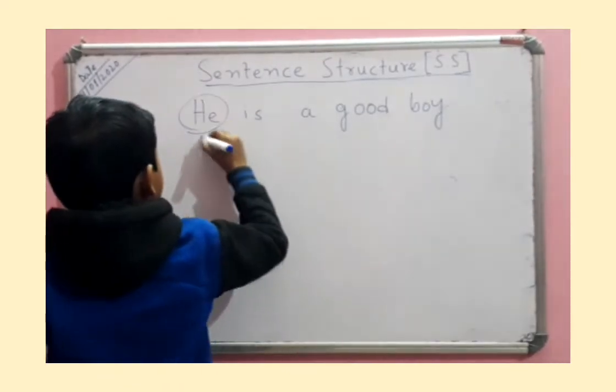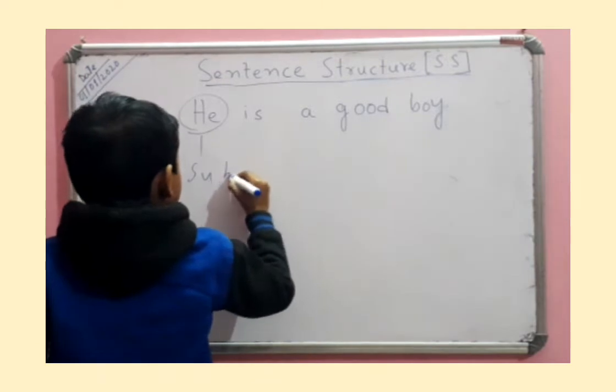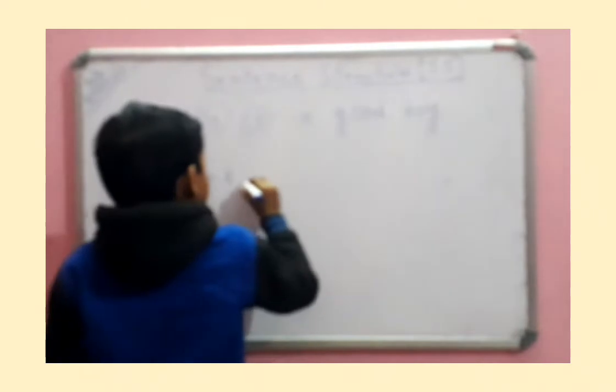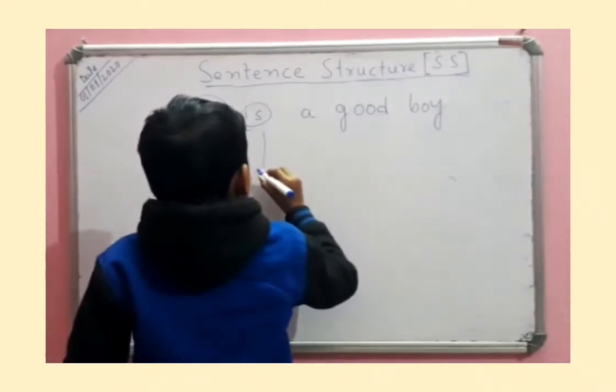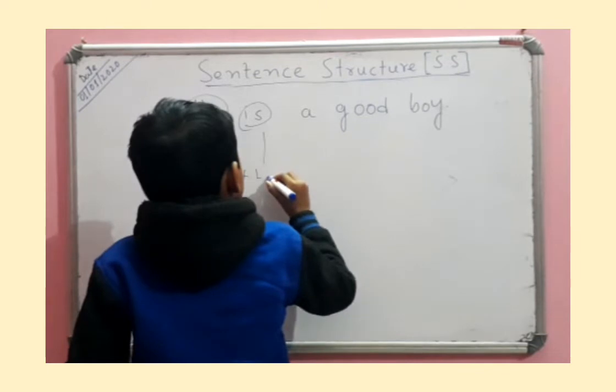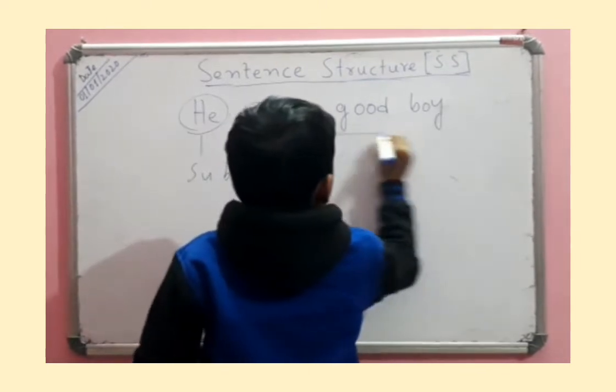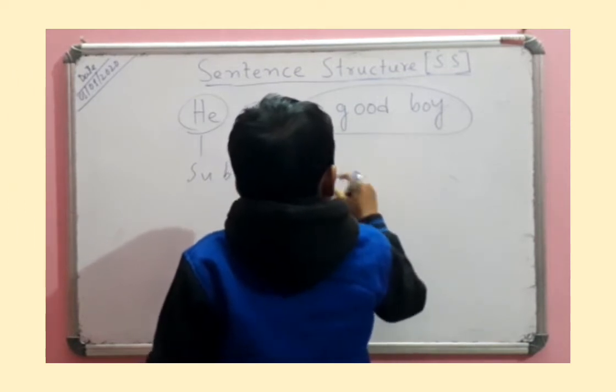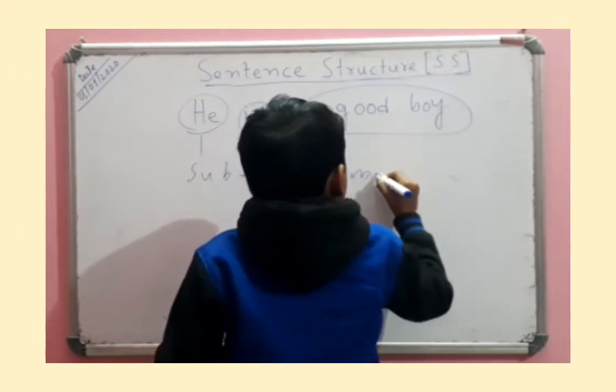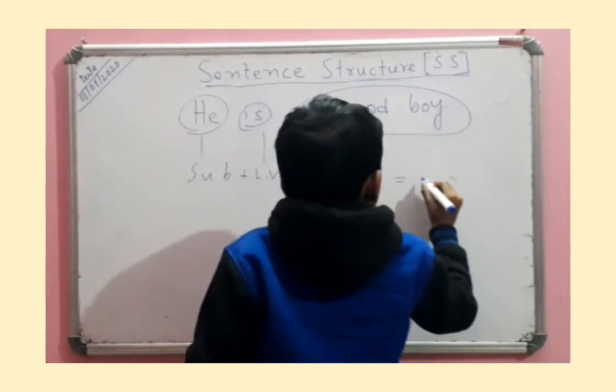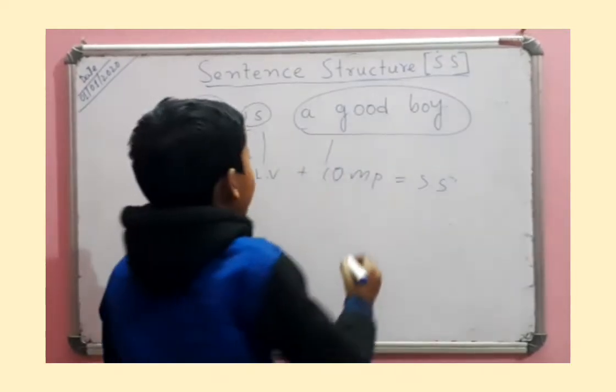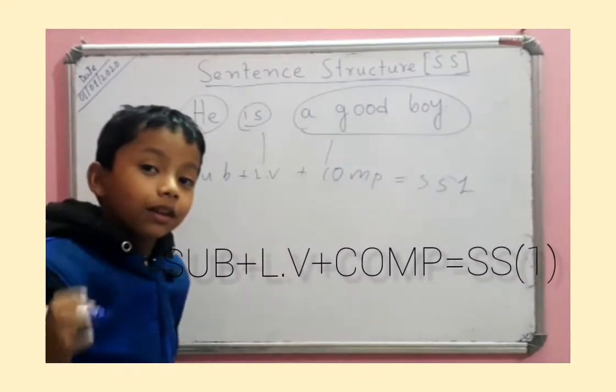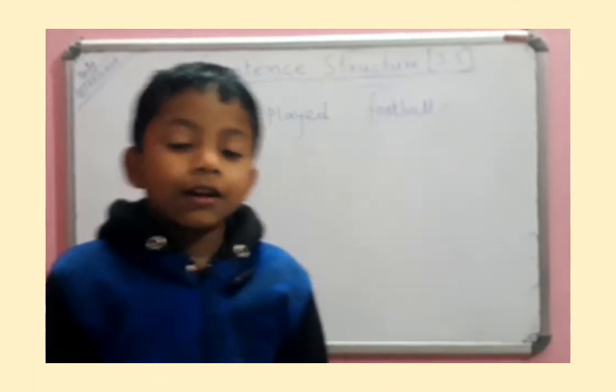'He' is a subject because it's a subject, plus LV means linking verb. 'A good boy' is a complement. This equals SS. This is SS1, but this is SS1. Hello guys, today is another episode from watching as SS1.